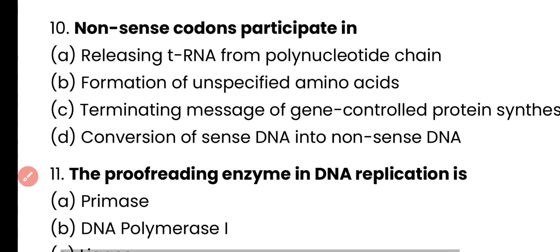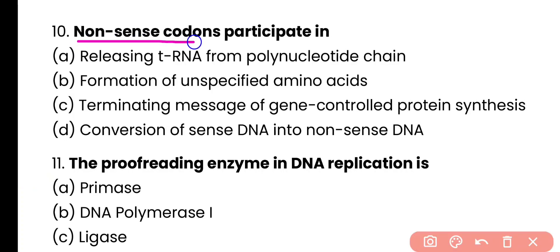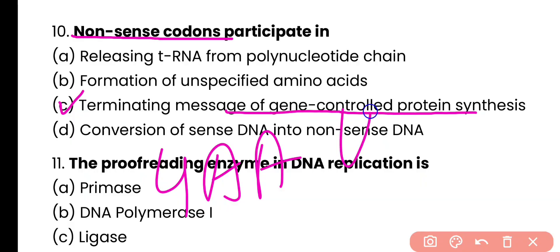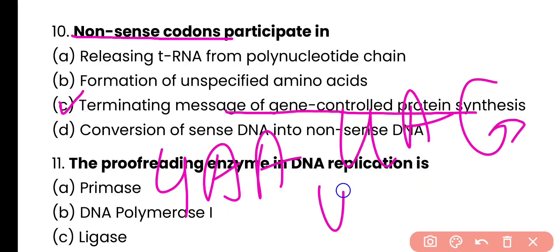Question number 10. Nonsense codons participate in: releasing transfer RNA from polynucleotide chain, formation of unspecified amino acids, terminating message of gene-controlled protein synthesis, or conversion of sense DNA into nonsense DNA? Correct answer is option C. Nonsense codons, also known as stop codons, participate in terminating the message of gene-controlled protein synthesis. There are three nonsense codons: UAA, UAG, and UGA.